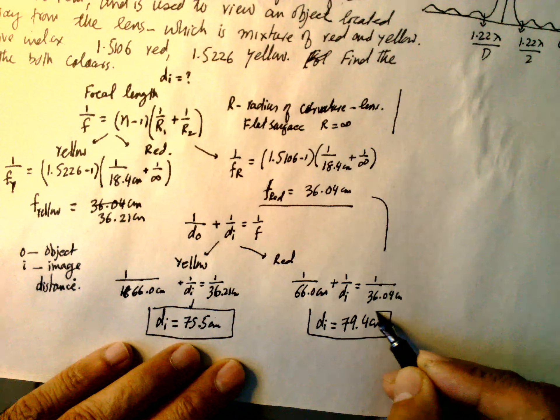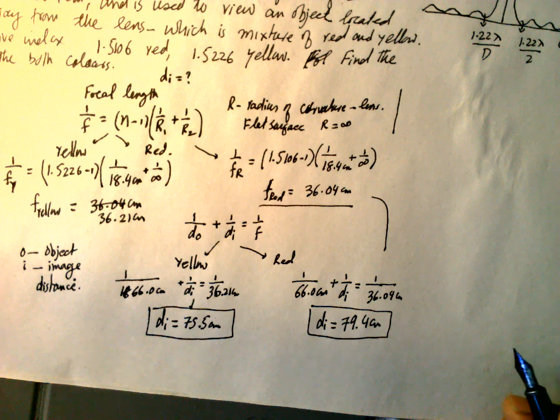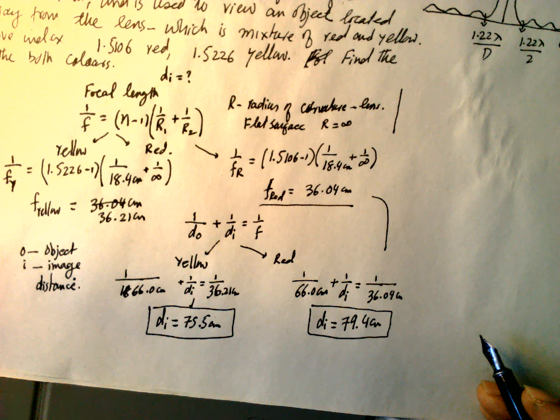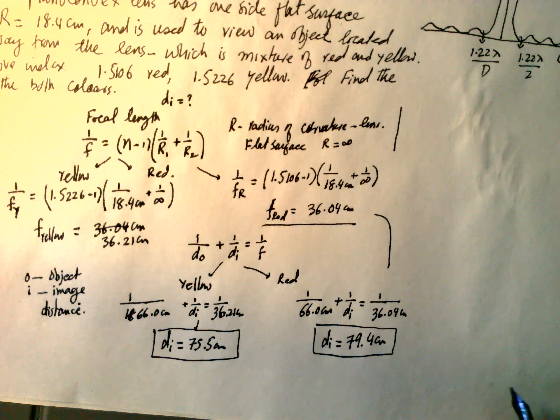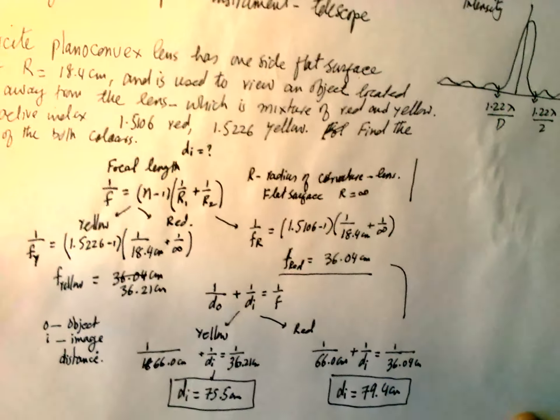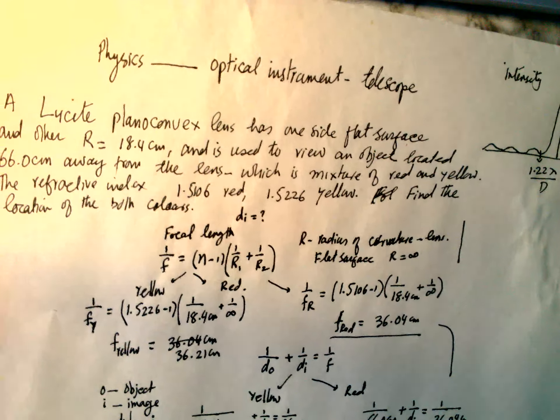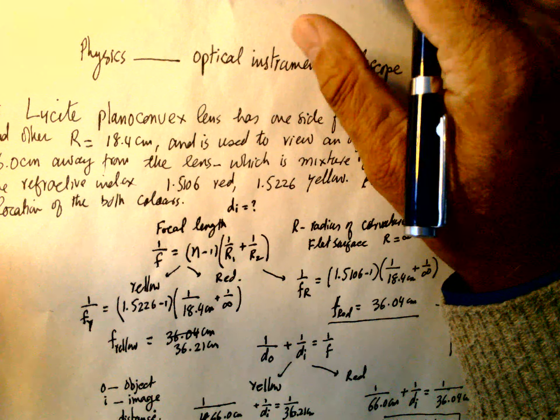So these are the two distances of the images from the convex plano-convex lens. So this is the answer of this question.